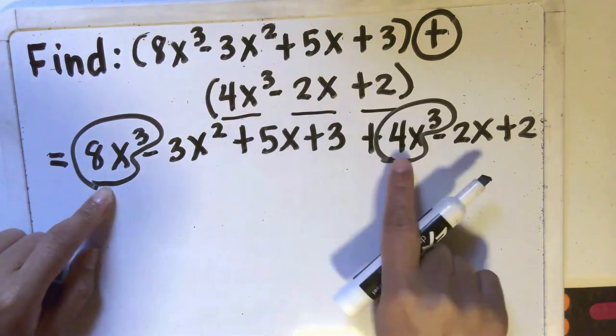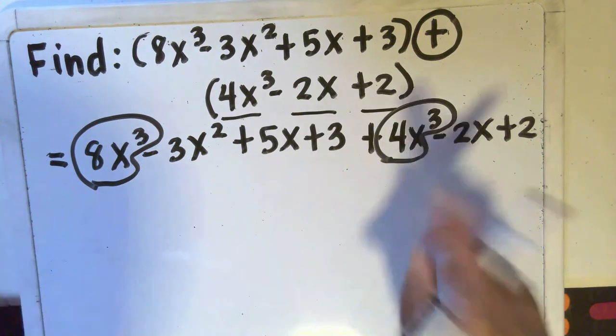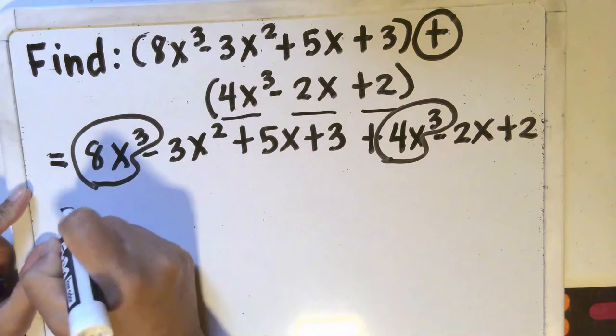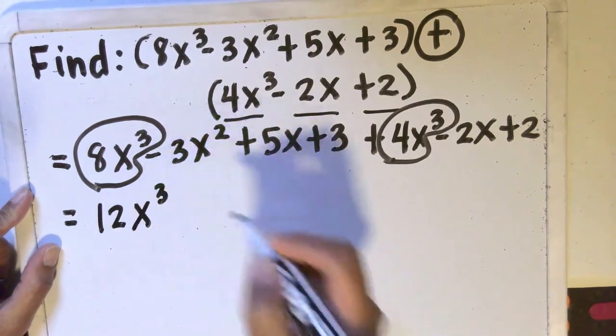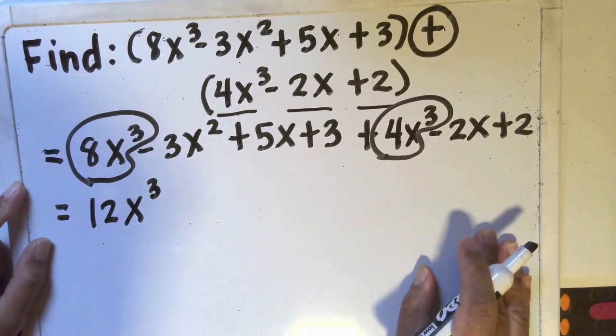8x³ is positive, 4x³ is also positive, so all I need to do is add them. 4 plus 8 is 12 so I will have 12x³. What else can I combine?